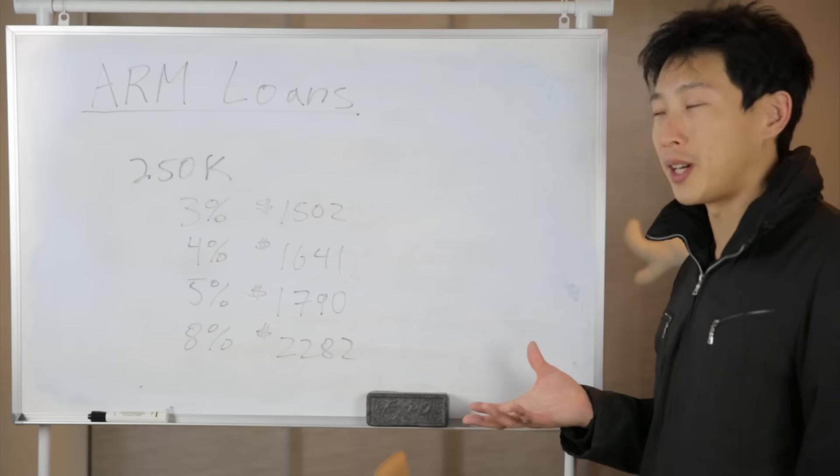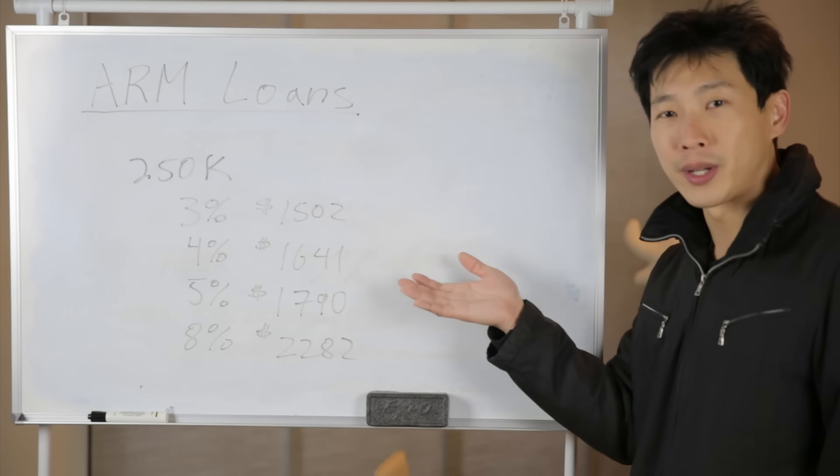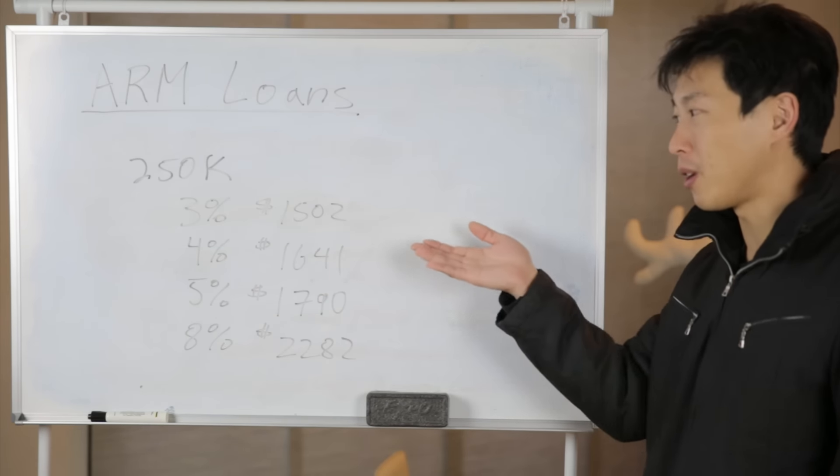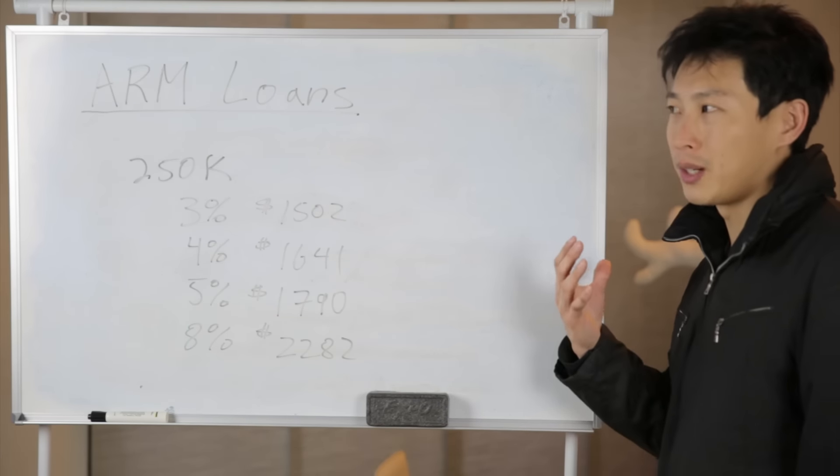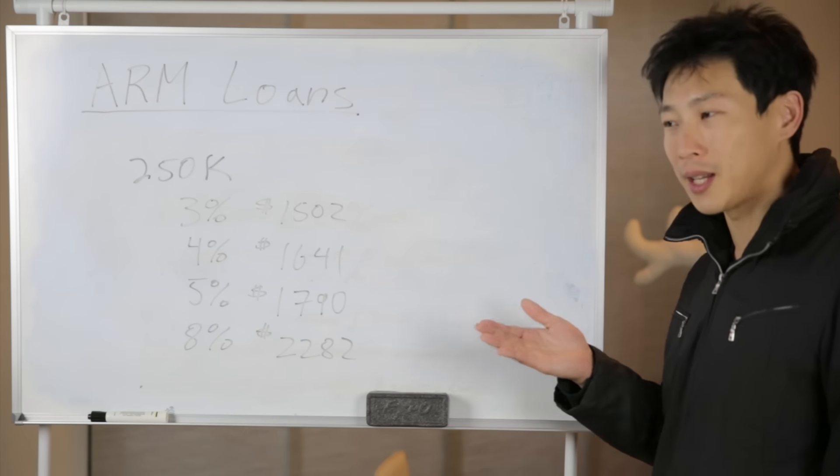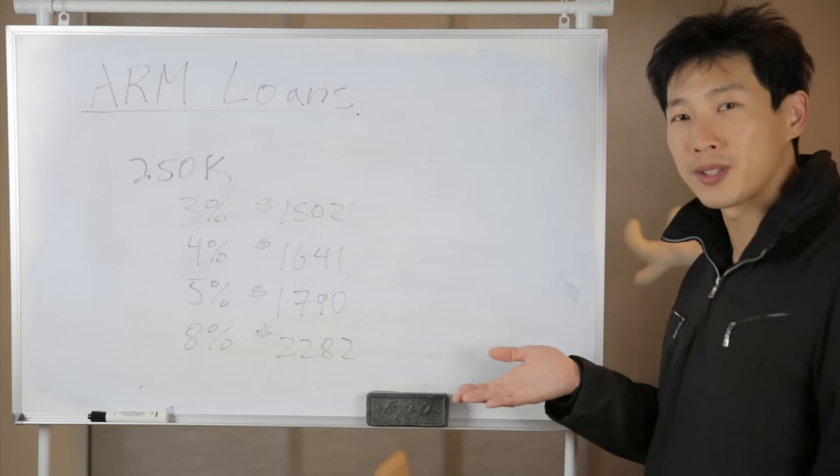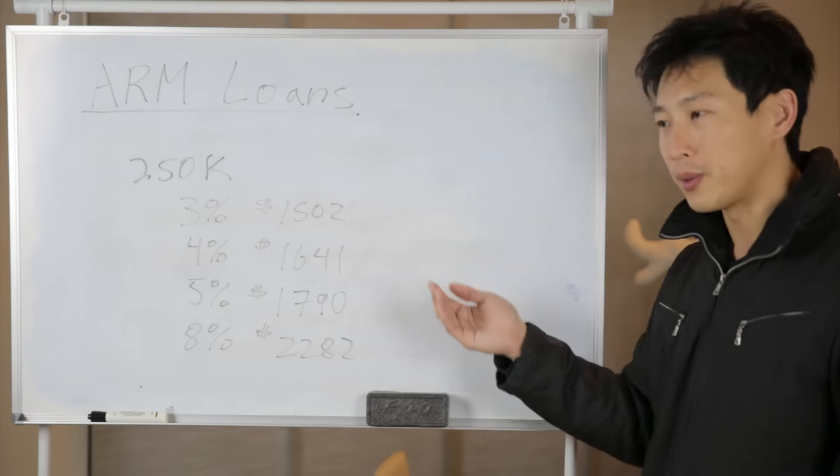The loan officer might try to convince you that maybe you should go with an adjustable rate because it's lower interest right now, you'll have a lower payment. But there are dangers lurking beneath. They might try to say, oh, you know, most people, they only stay at a house for like 5 to 7 years and then they move on to somewhere else. So therefore, you would sell. Therefore, you would never enter into the adjustable rate mortgage part.